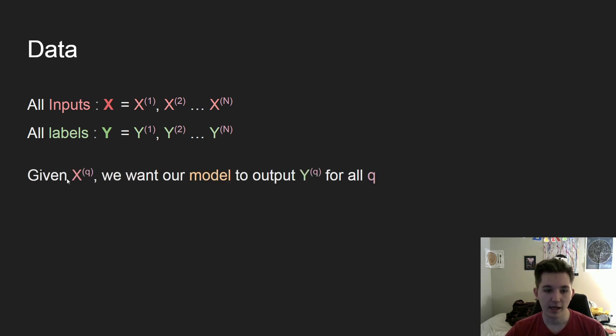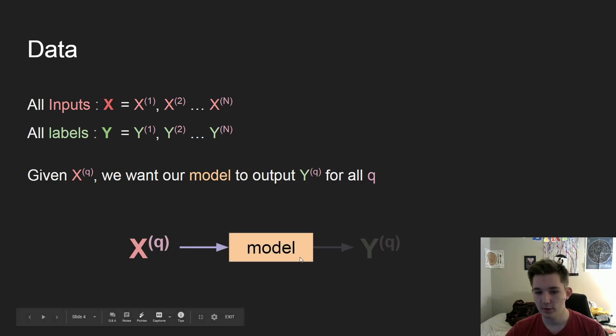So given some x to the q, some qth piece of data, we want to take this qth input and get this yth output. And we want to have that happen for every single one of the pieces of data. So you can think of it as inputting our xq into the model and getting yq.